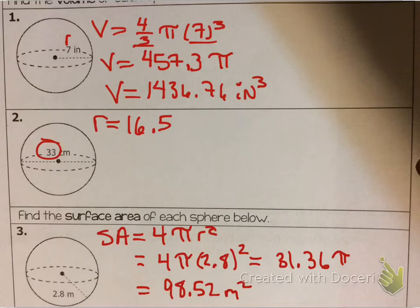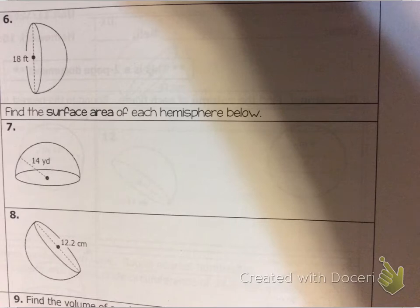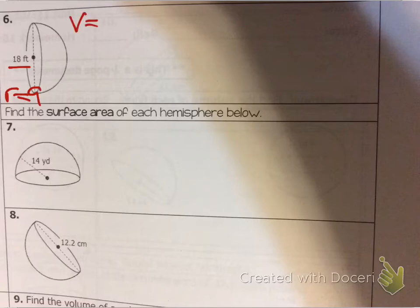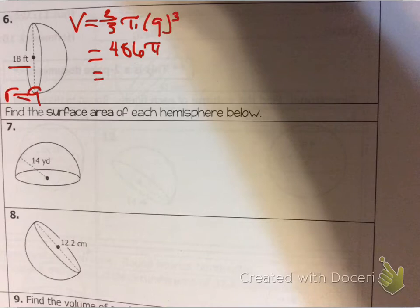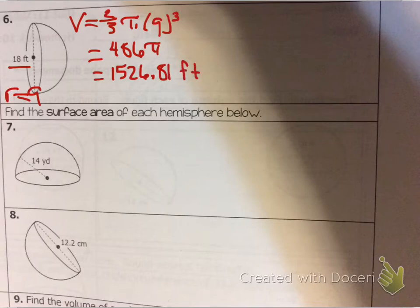Now let's look at the hemisphere. Same idea — just plug in the numbers. I need the radius, and since I have a diameter, the radius is 9 feet. For the volume: two-thirds times π times 9 cubed. Two-thirds times 9 to the third power gives 486π, and then multiplying by π gives 1526.81 cubic feet.